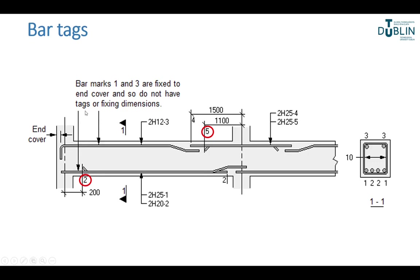Another thing is bar tags. In addition to the label sequence on a bar, it is necessary to indicate where the bar begins and ends. This is achieved by inserting a bar mark in line with the bar extremity together with a fixing dimension if necessary — this is called tagging. Some tagging procedures are unique to specific elements such as slabs and staircases, and will be dealt with in later topics.